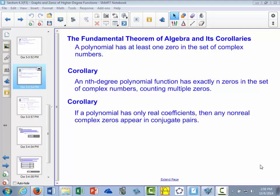The corollary says an nth degree polynomial function has exactly n zeros in the set of complex numbers, counting multiple zeros.